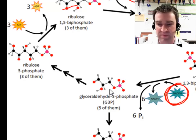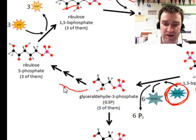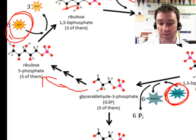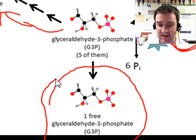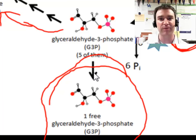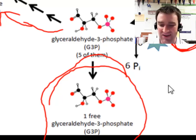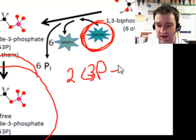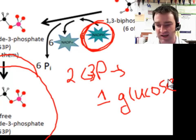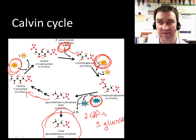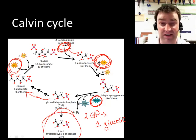Most of those sugars go back to repeat the process, with a little more ATP spent to turn them back into the sugar that can combine with more carbon dioxide. But the important part of the Calvin cycle is that some sugar floats away free — that's the sugar produced in photosynthesis, called G3P. Technically, two G3Ps combine to make one glucose. So three turns of this cycle make one G3P, and six turns make one glucose — but you can really just think of the Calvin cycle as making glucose.